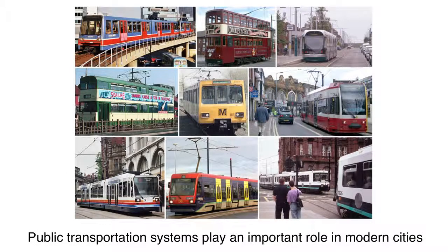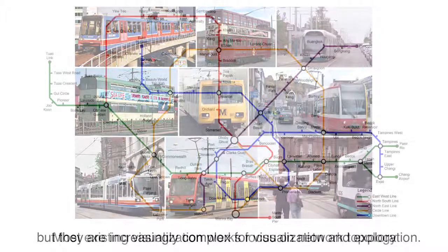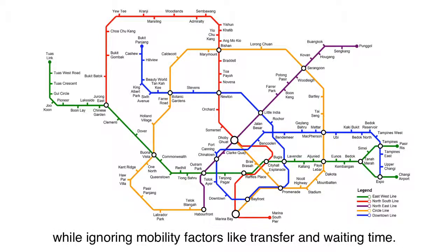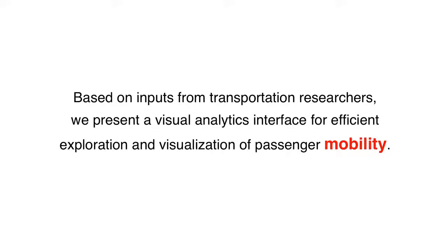Public transportation systems play an important role in modern cities, but they are increasingly complex for visualization and exploration. Most existing visualization works focus on network topology, while ignoring mobility factors like transfer and waiting time. Based on inputs from transportation researchers, we present a visual analytics interface for efficient exploration and visualization of passenger mobility.